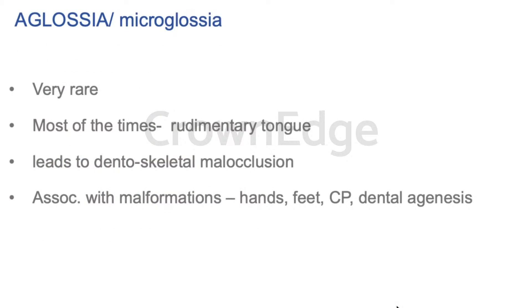Aglossia is a very rare condition where the tongue is completely absent. Most of the time there will be a rudimentary tongue, which is basically known as microglossia. Because there is no tongue, it leads to dentoskeletal malocclusion, which is associated with other malformations related to hands, feet, cleft palate, and dental agenesis.